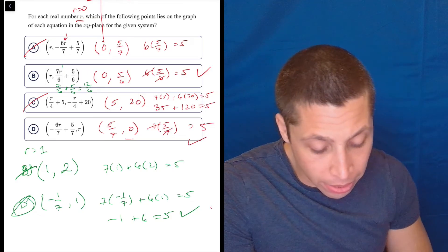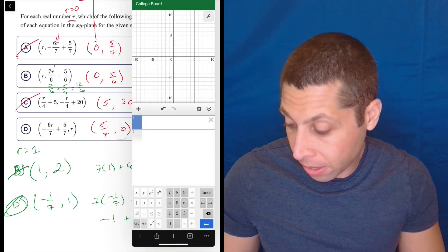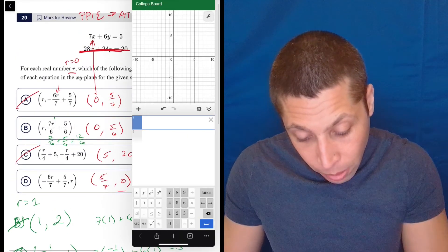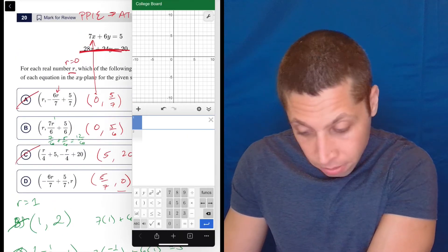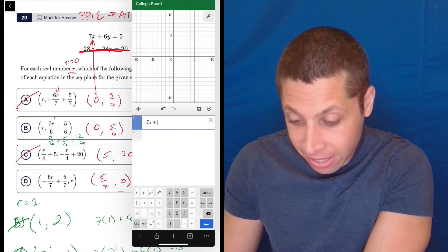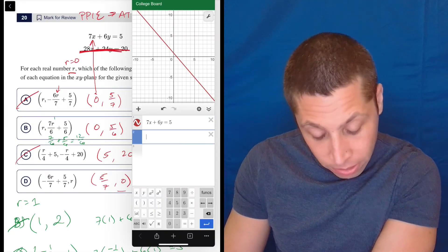Another way to do it is to go into Desmos, and you can type all these points. Let's see if I can do it fast. If I typed the original equation, 7... There it is. As soon as I can get a keyboard, anything is possible with Desmos. But on the iPad, it sucks.